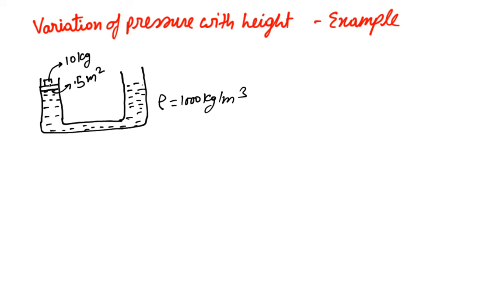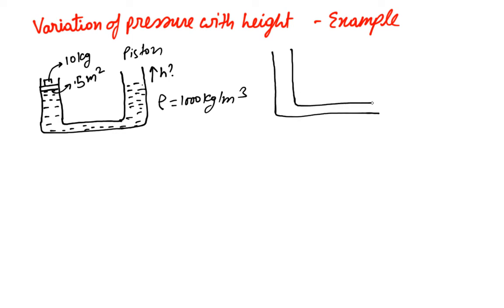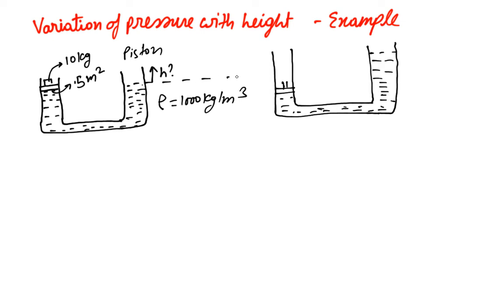The question is: because we placed the piston here, this fluid on one side is going to go up and the fluid on the other side is going to go down. So the question is: how much will this fluid rise because of this piston? The piston will settle here, and this is how the fluid will rise in this arm from its initial position — how much is the rise h?